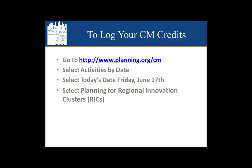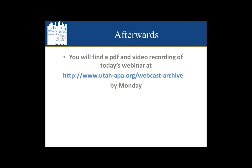Select activities by date, and then underneath Friday, June 17th, you'll see Planning for Regional Innovation Clusters. We are recording today's session, so afterwards you'll be able to go to www.utah-apa.org/webcast-archive, and you'll find the video recording and a PDF. This should be up by Monday.